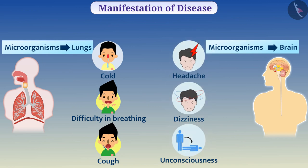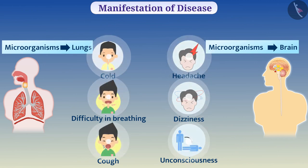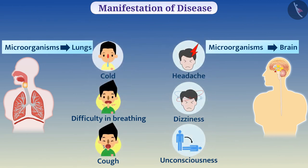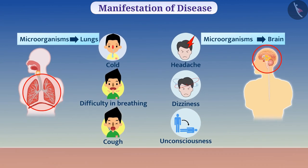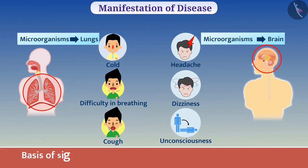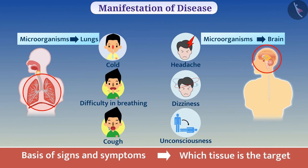Therefore, the signs and symptoms of disease will depend on the organ and tissue which the microbe targets. That is why, on the basis of signs and symptoms, we can know which tissue is the target.